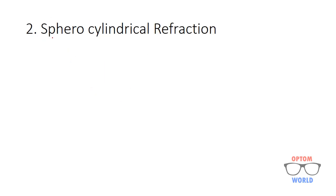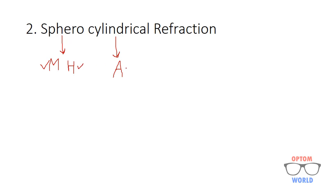The next type is sphero-cylindrical refraction. As the name indicates, we are using here spherical lenses as well as cylindrical lenses. Cylindrical lenses are used to correct astigmatism, and spherical lenses, as mentioned previously, are used to correct myopia and hypermetropia. So sphero-cylindrical refraction is used to correct all these refractive errors: myopia, hypermetropia, and astigmatism.